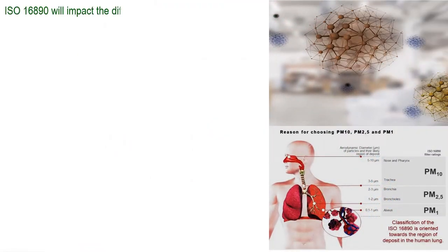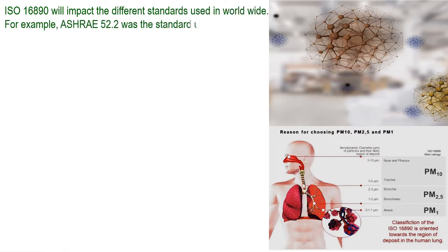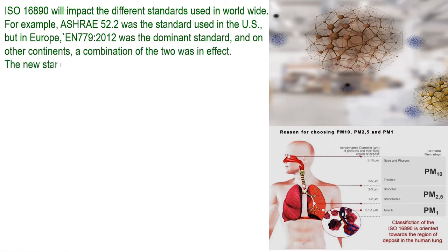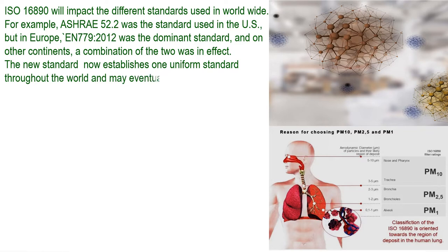ISO 16890 will impact the different standards used worldwide. For example, ASHRAE 52.2 was the standard used in the US, but in Europe, EN 779 2012 was the dominant standard. On other continents, a combination of the two was in effect. The new standard now establishes one uniform standard throughout the world, and may eventually supersede the various current standards.